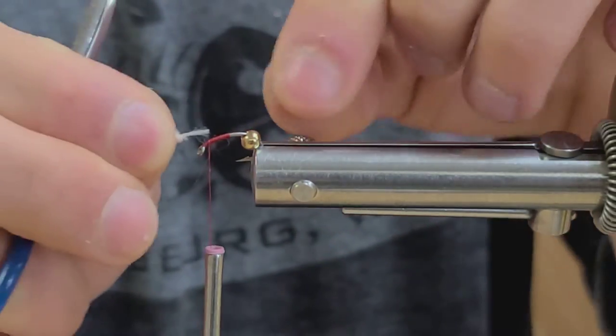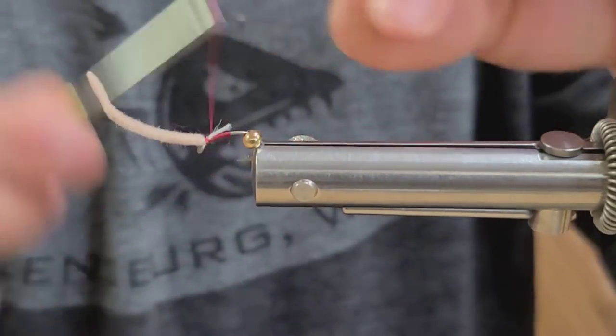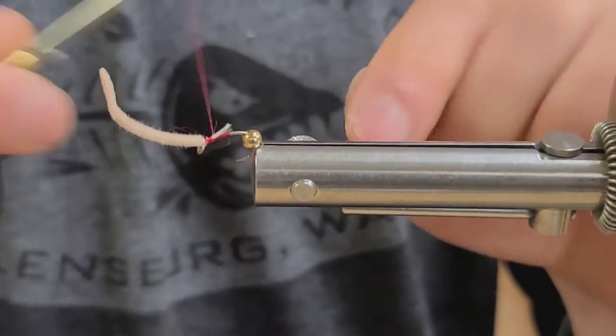So now that that core is exposed, you can tie in a really strong connection to that Ultra Chenille and a really slim body on that hook.